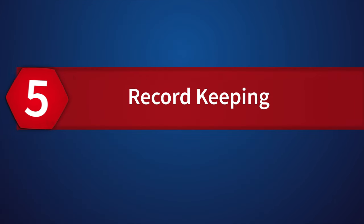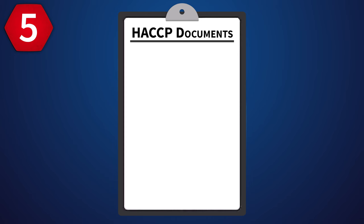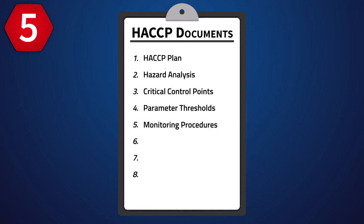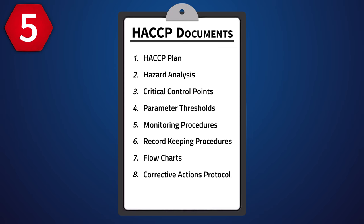Record keeping is a vital element of a HACCP plan. All plans regarding food safety and data monitoring should be properly documented and updated when changes are made. HACCP compliant record keeping will include the following documents: a written HACCP plan, the hazard analysis, the identified critical control points, the parameter thresholds, monitoring and verification procedures, record keeping procedures, flow charts, and the corrective actions protocol.